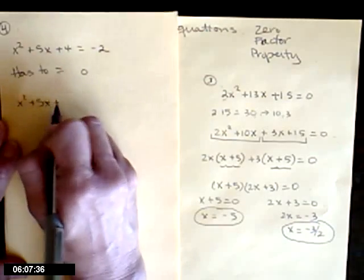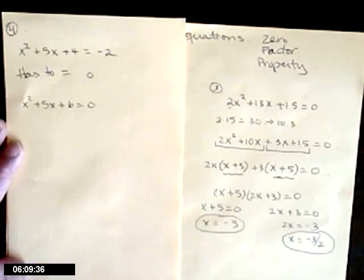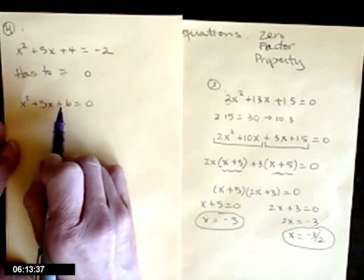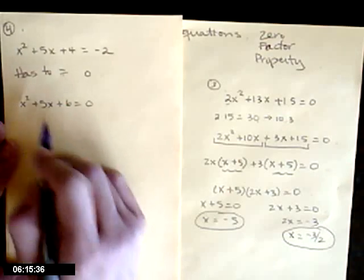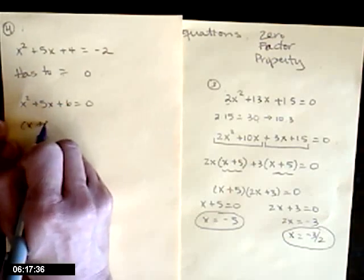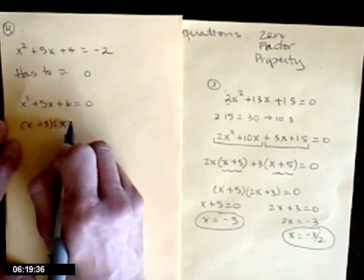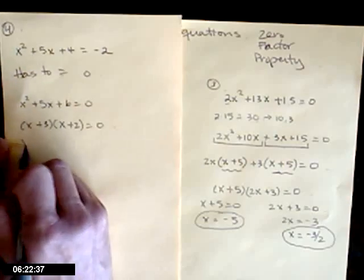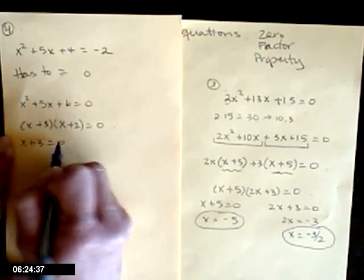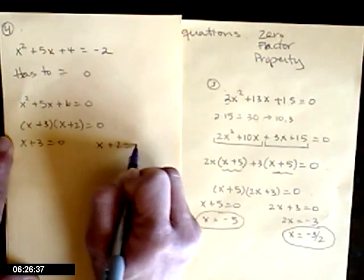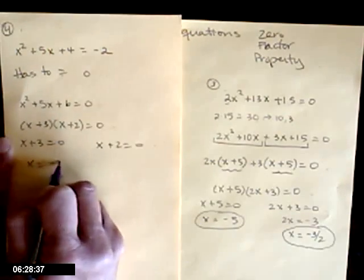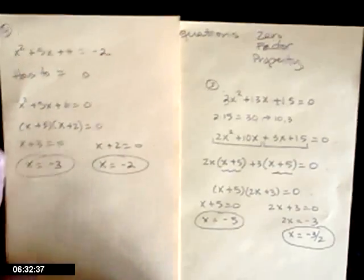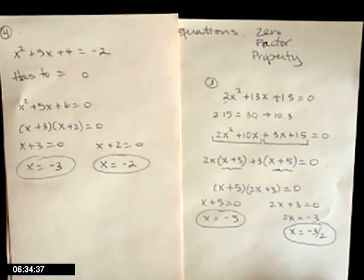Bring the 2 in — it adds with the 4 to give plus 6. This is just like the previous example: multiply to 6, add to give 5, and this time 5 is positive, so x plus 3 times x plus 2 equals 0. Either x plus 3 equals 0 or x plus 2 equals 0, giving x equals negative 3 or x equals negative 2. Notice I didn't stop until I reached x equals.